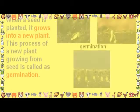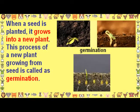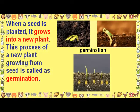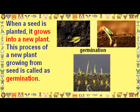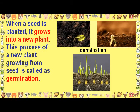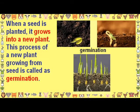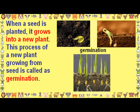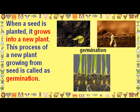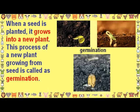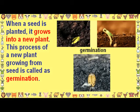When a seed is planted, it grows into a new plant. This process of a new plant growing from a seed is called germination.